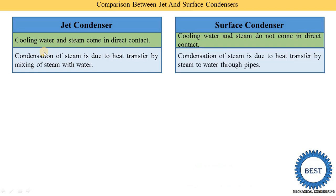In a surface condenser, condensation of steam is due to heat transfer from steam to water through the pipe. The water is passed inside the tubes and outside the tubes the steam is present. Steam supplies heat energy to the pipe, and this heat energy is absorbed by the water. So the temperature of the water increases and the steam is condensed.